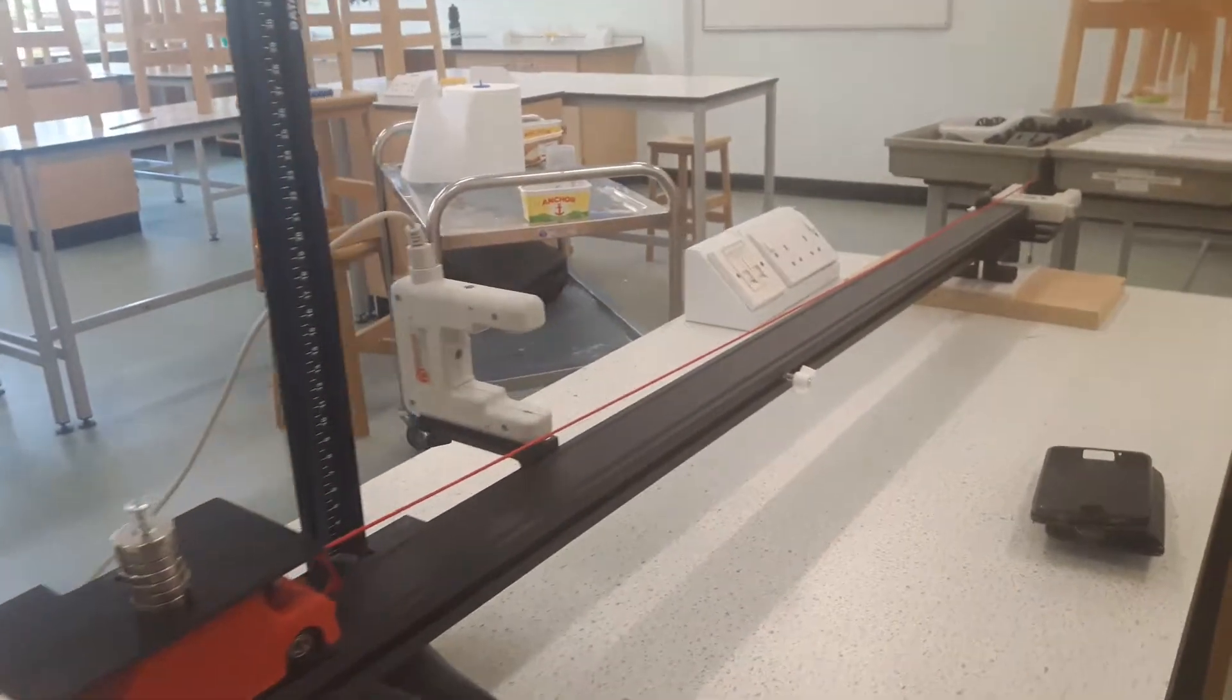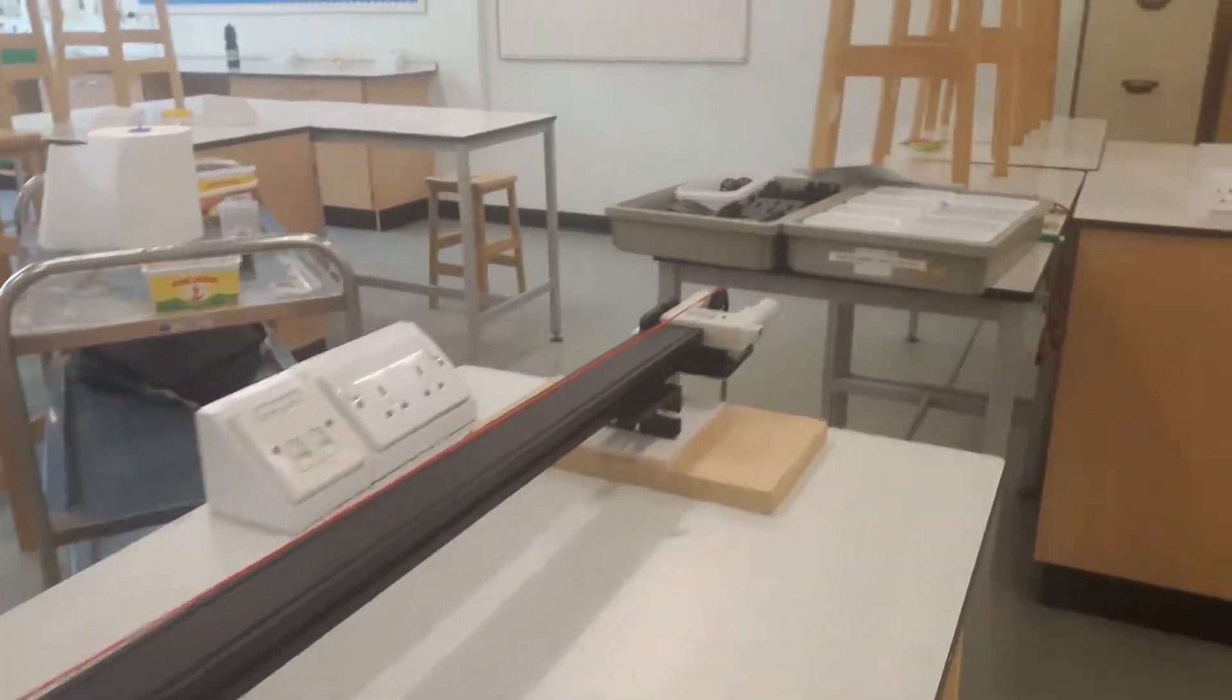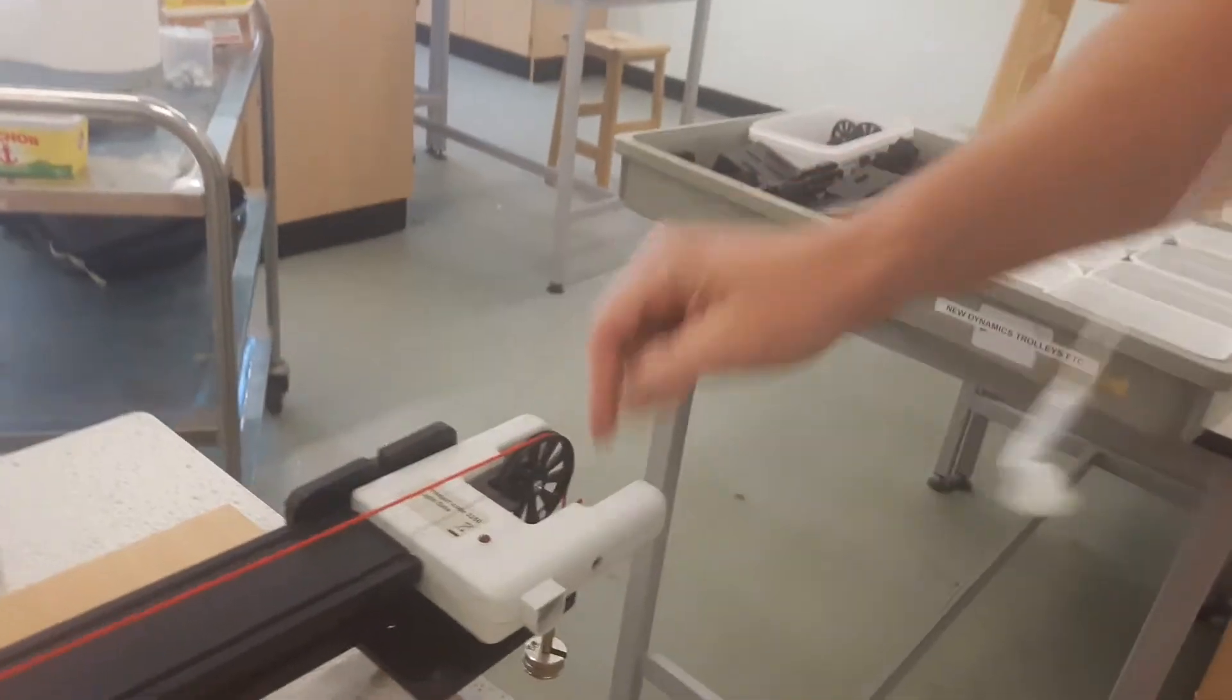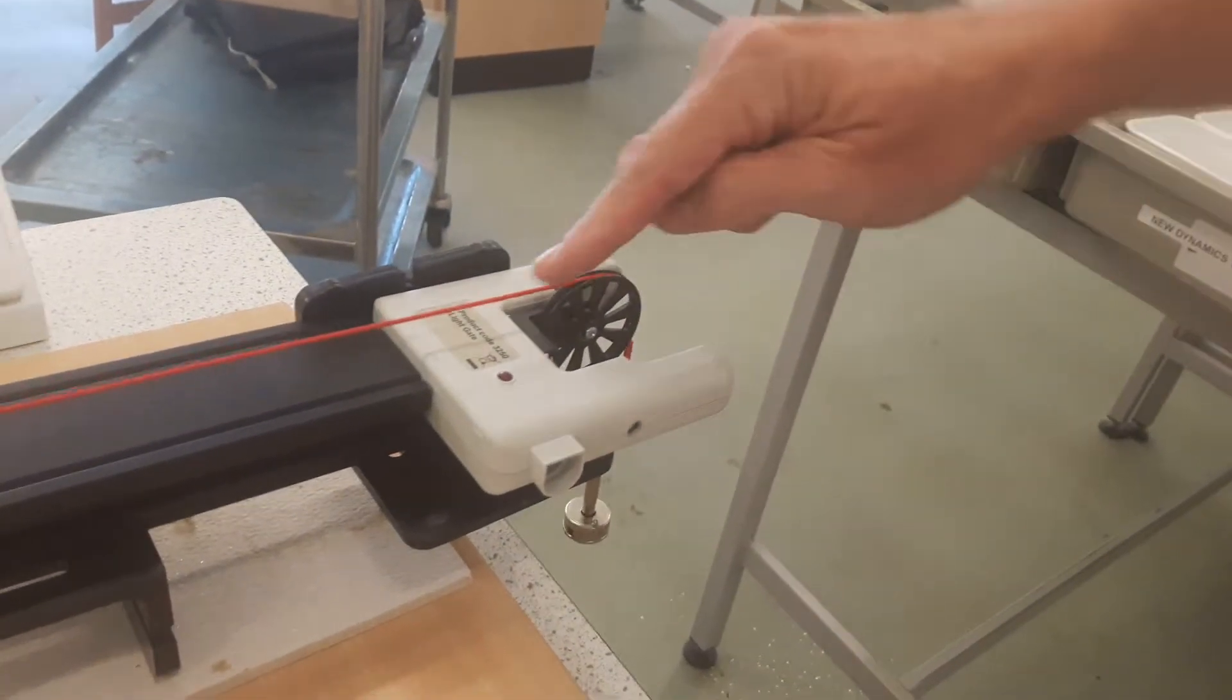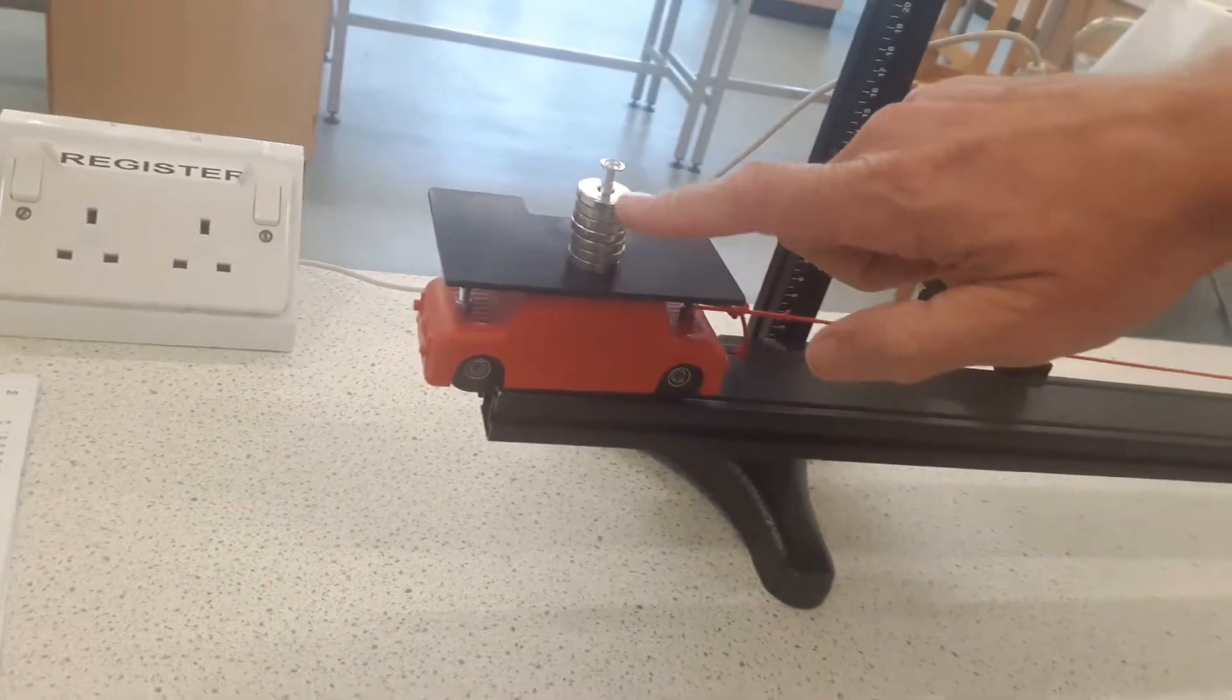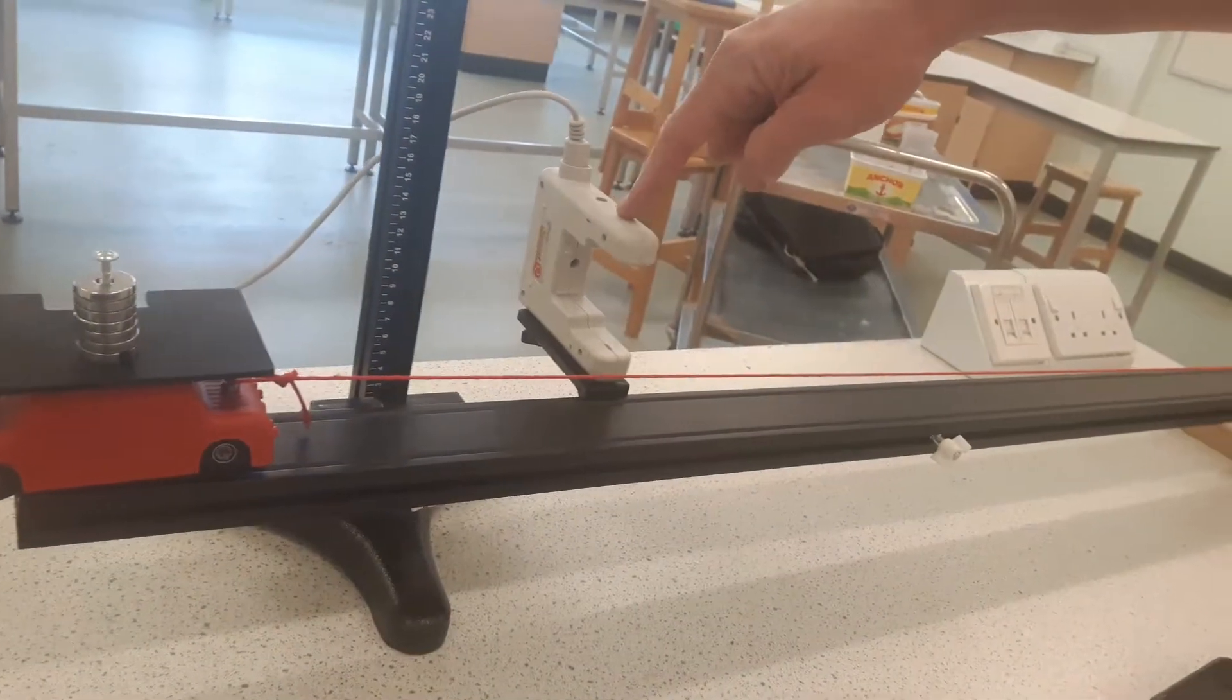This is Newton's first law experiment and I'm going to point you to all the features of the experiment. We'll start down this end where we have a pulley, and on the end of the pulley is a mass hanger. That mass hanger is connected by a string all the way up to the trolley, and the trolley has on it a number of masses. Just here we have the light gate.